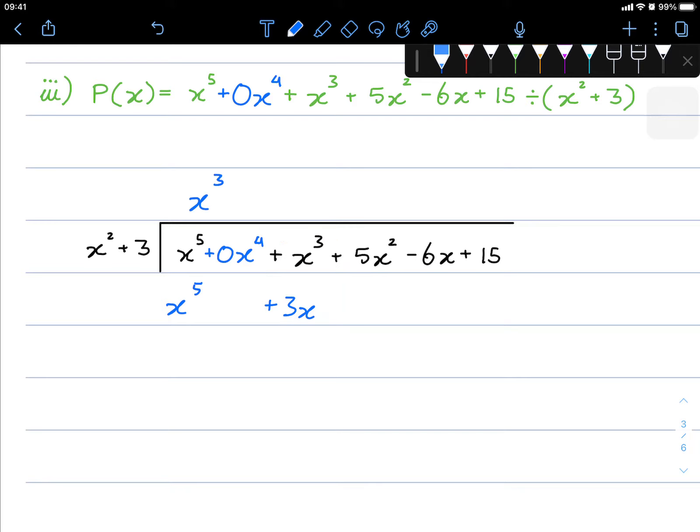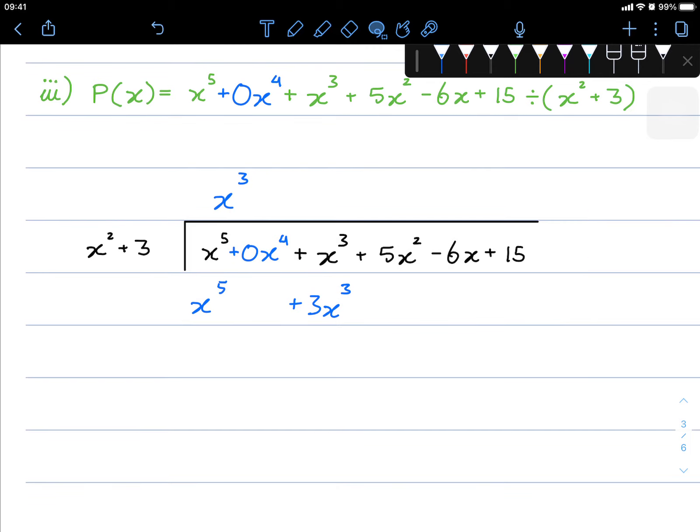Now here is where it's very important to include that 0x to the power of 4. Let's say that our divisor was not just 3 but it was 3x. So this step where we do the multiplication, it would have been 3x times x cubed. This would have given us 3x to the power of 4. Notice how this time in purple, I matched it with the correct like term. And we would have continued our long division like so.